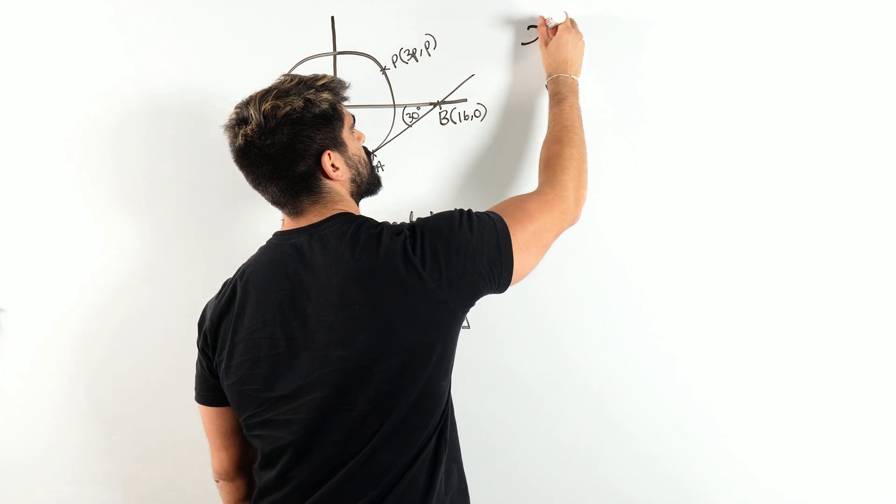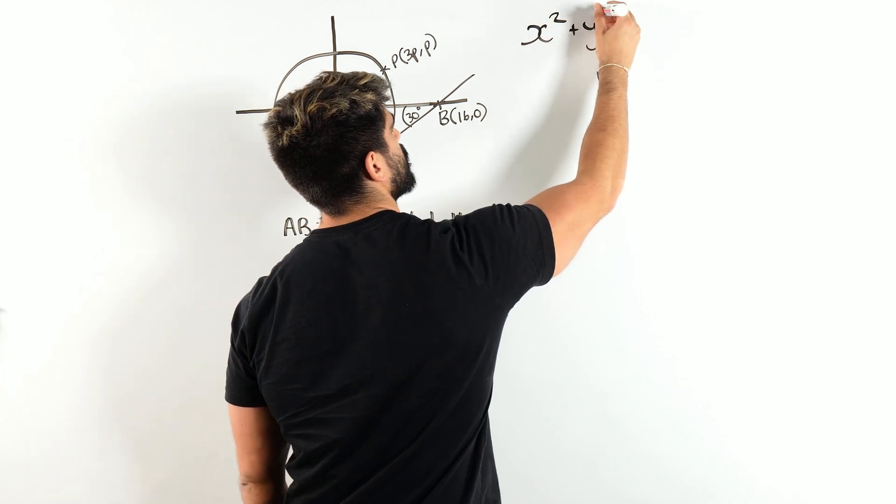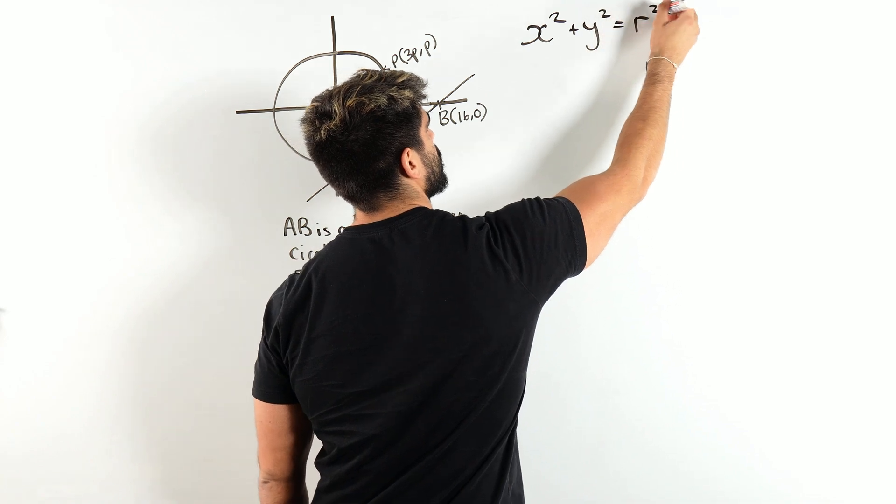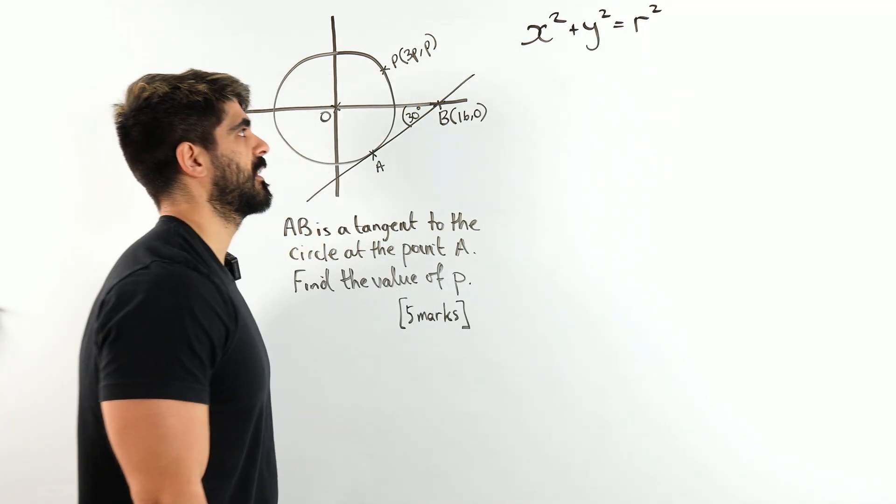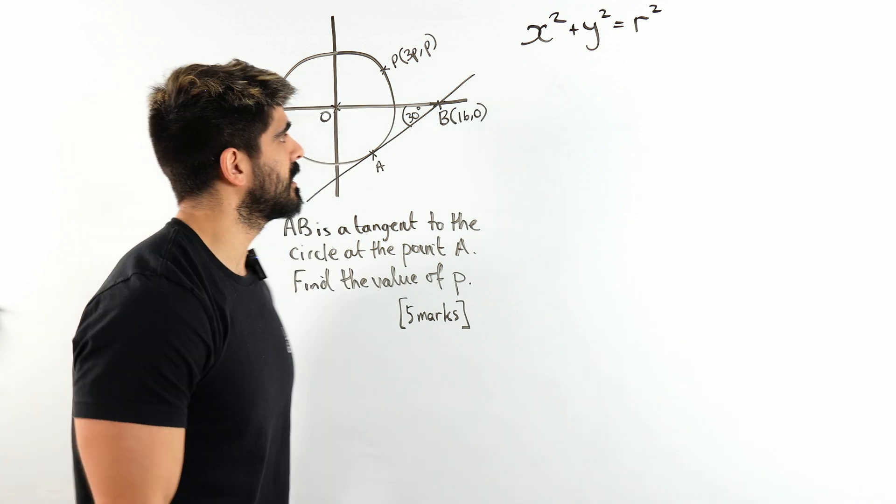What is the general equation of a circle where the center is at zero? You need to know this, it's x squared plus y squared equals the radius squared. So what's the missing piece? It's obviously the radius.